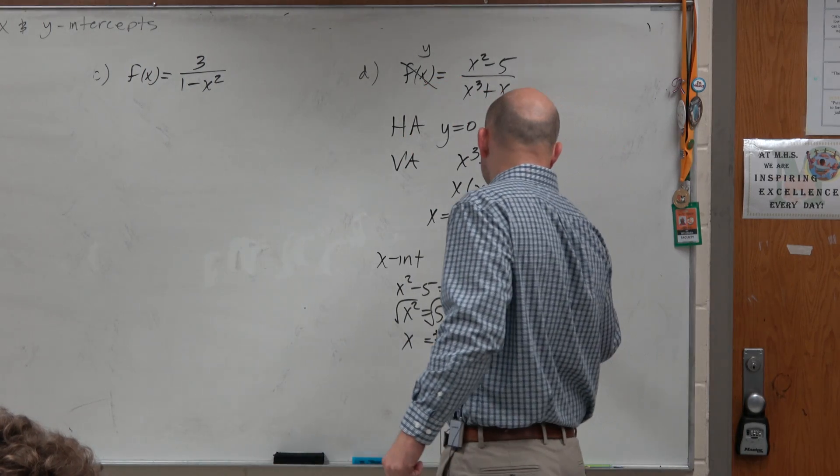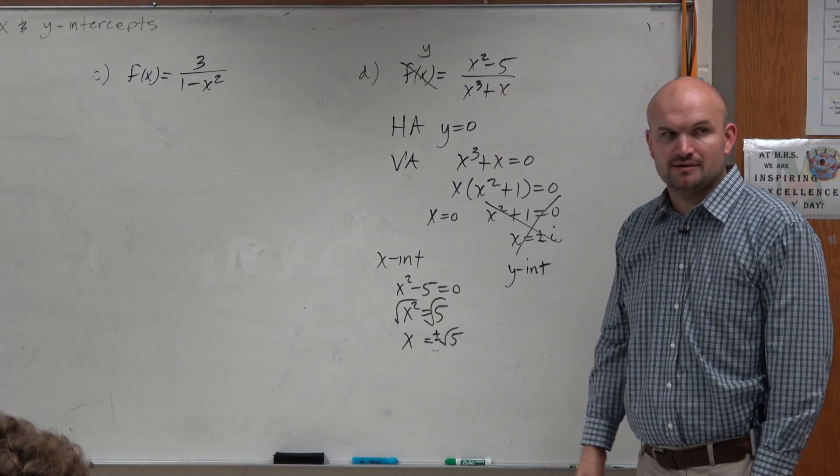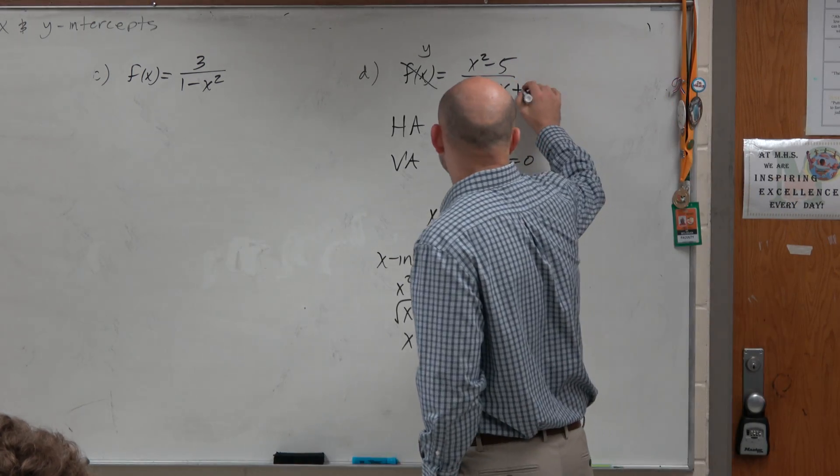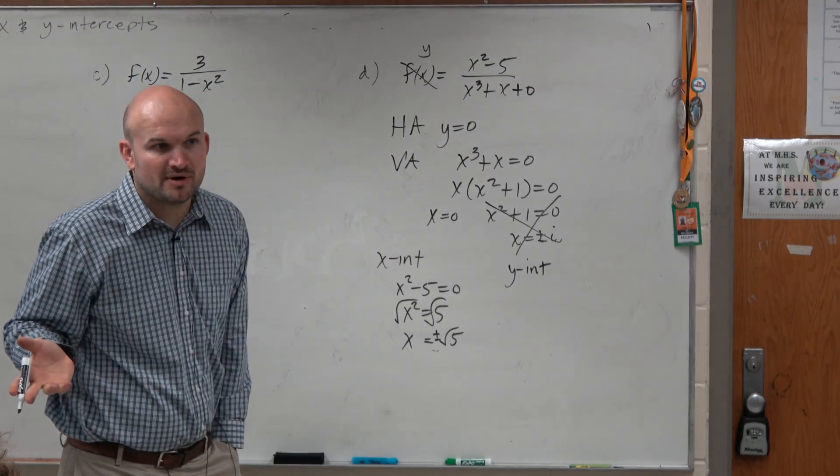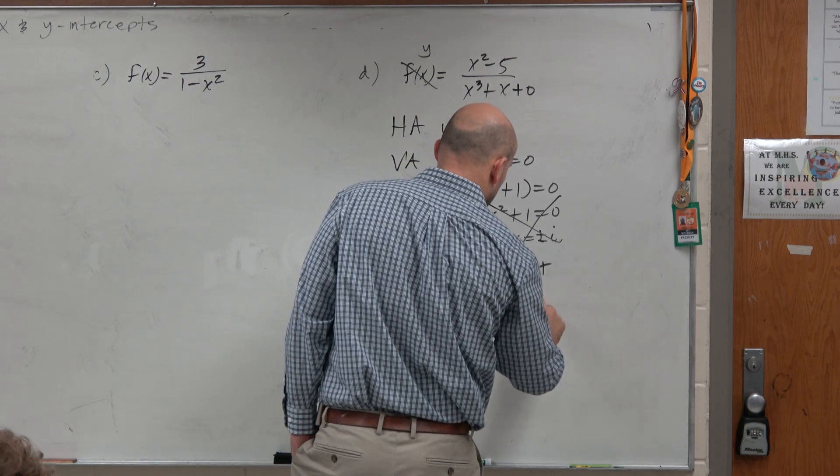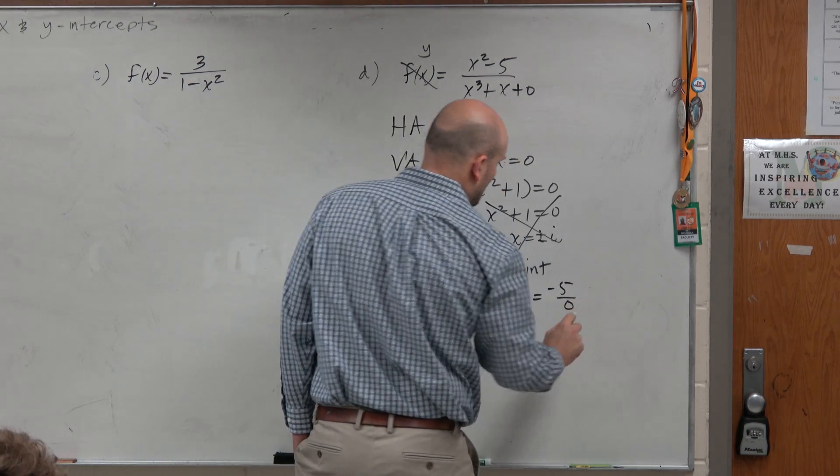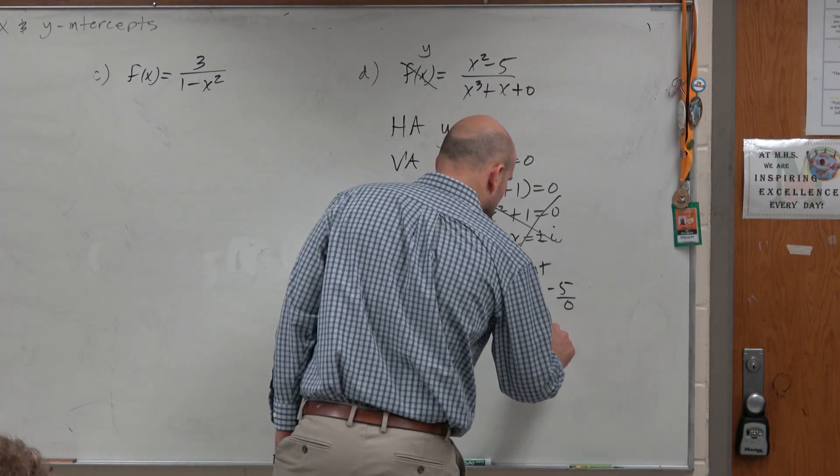The y-intercept, constant over constant. I don't have a constant here. So could I put like a 0 there if I wanted to? Yes? I mean, that's not changing the problem, right? Just adding a 0. So it's really negative 5 over 0. Uh-oh. That doesn't work, does it? So guess what? There is no y-intercept.